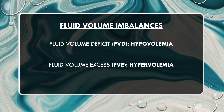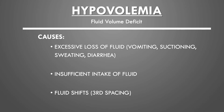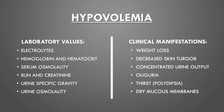The two fluid volume imbalances are fluid volume deficit — hypovolemia — and fluid volume excess — hypervolemia. Causes of hypovolemia include fluid loss via vomiting, suctioning, sweating, and diarrhea, as well as inadequate fluid intake. Fluid shifts within the body, also termed third spacing, can also cause hypovolemia in response to trauma, burns, and liver dysfunction.